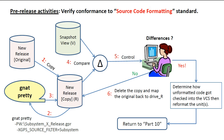Steps 4 and 5: a utility is used to compare each newly formatted unit on the release drive against a corresponding unit on the version drive. Now, if everybody followed the rules, no differences will be reported, which is what we expect. If, however, a difference is detected, then we need to investigate how unformatted code ended up in the version control system, followed by a format of one or more units, then it's back to Part 10. In Step 6, the copy is deleted and the original is mapped back to Drive R.